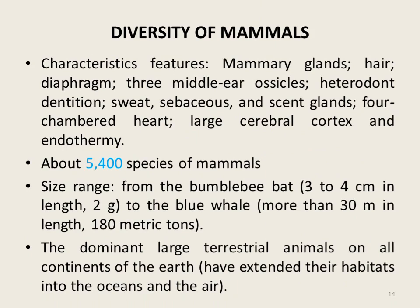Now let's discuss the diversity in class Mammalia. Certain features characterize members of this class: hair on the skin, mammary glands, middle ear ossicles, sweat and sebaceous glands, a four-chambered heart, and heterodont dentition. More than 5,400 species of mammals have been identified and studied so far.